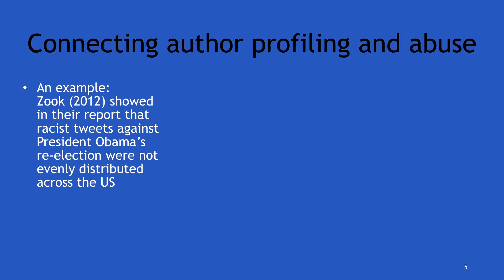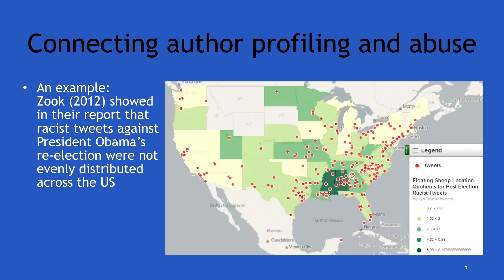What connects author profiling and abuse? In 2012, Matthew Zook showed in his report that racist tweets against President Obama's re-election were actually not uniformly distributed across the U.S., but were instead clustered. This suggests that there exists some sense of community and homophily amongst abusive authors.